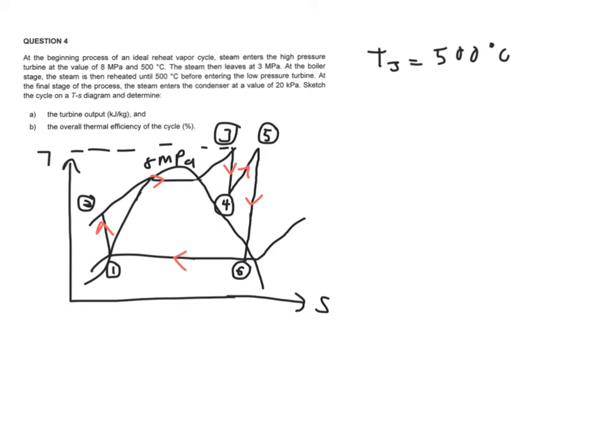So here what it says is leaves the high pressure turbine at 3 MPa. Now you know that this pressure line over here is actually 3 MPa. So if you can extend this thing, you have 3 MPa along this line.